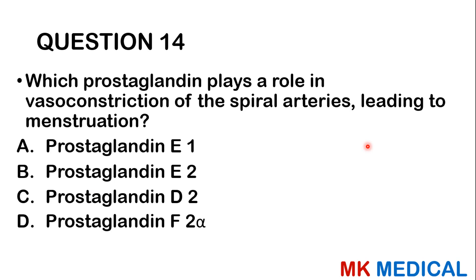Question fourteen: Which prostaglandin plays a role in vasoconstriction of spiral arteries leading to menstruation? A, prostaglandin E1; B, prostaglandin E2; C, prostaglandin D2; D, prostaglandin F2-alpha. Phospholipids in the body are broken down into arachidonic acid by phospholipase A2. This can enter the lipoxygenase pathway to produce leukotrienes, or the cyclooxygenase pathway producing prostaglandins and prostacyclins. It is prostaglandin F2-alpha that causes contraction of spiral arteries leading to menstruation. The answer is D.